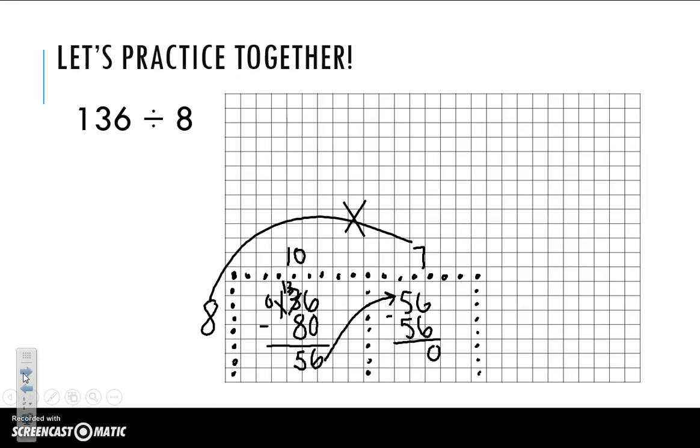And lucky for us, we have nothing left over. So now all that's left to do is add our 2 numbers that we just got. 10 plus 7 equals 17 allowing us to find our answer of 136 divided by 8 equaling out to 17.